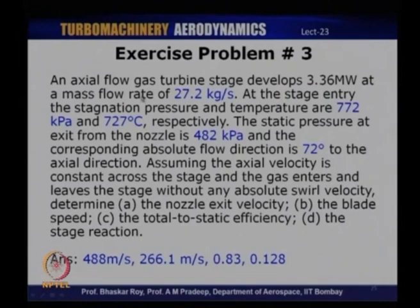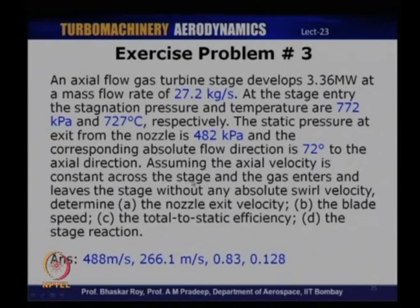The third exercise: an axial flow gas turbine stage develops 3.36 MW at 27.2 kg/s mass flow rate. Stagnation pressure and temperature at stage entry are 772 kPa and 727°C. Static pressure at nozzle exit is 482 kPa and absolute flow direction is 72° to axial. Axial velocity is constant and gas enters and leaves without absolute swirl. Determine nozzle exit velocity, blade speed, total-to-static efficiency, and stage reaction. Answers: 488 m/s, 266.1 m/s, η_ts = 0.83, stage reaction = 0.128.